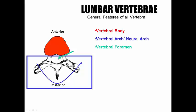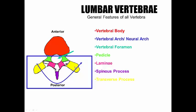We have the vertebral foramen, which is the hole for your spinal cord. You have the pedicle, which connects the vertebral body to the transverse processes. You have the lamina, which connects the transverse processes to the spinous process. And then you have the spinous process and finally your transverse processes — three processes, with connecting pieces of bone that make this archway over the vertebral foramen.